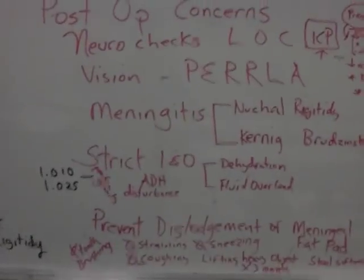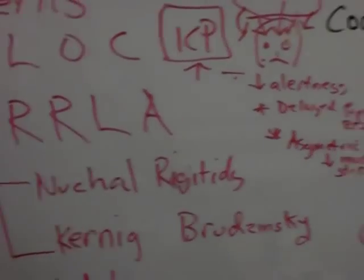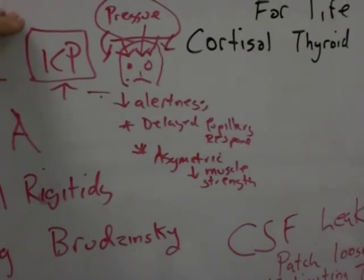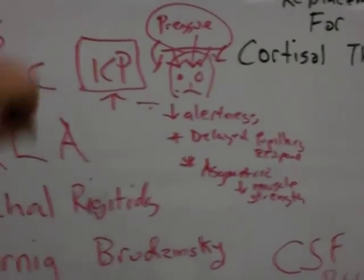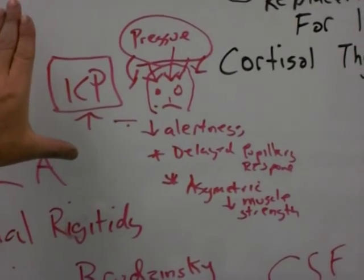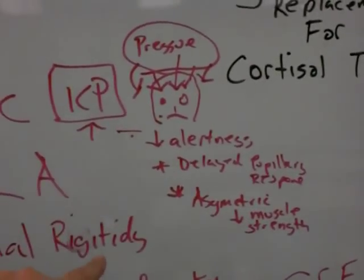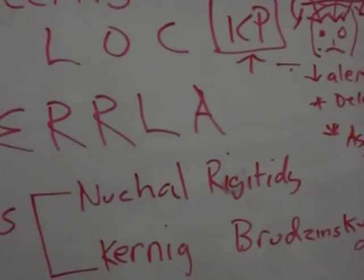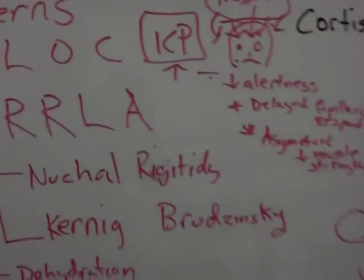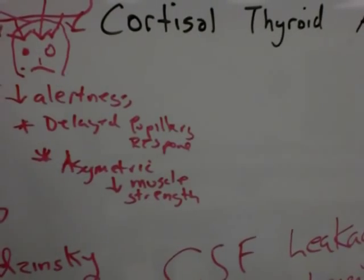Post-op concerns include neurochecks and level of consciousness. Neurochecks are very important. When we go into the cranial vault, the patient could develop intracranial pressure — maybe from bleeding within the cranial vault — and increasing intracranial pressure can easily wreak havoc and even bring about death. So we need to be careful. The best indicator for intracranial pressure is level of consciousness. If the patient is alert, that indicates we're not having a problem. But if we start to see a decrease in alertness, that is the first early sign of intracranial pressure.